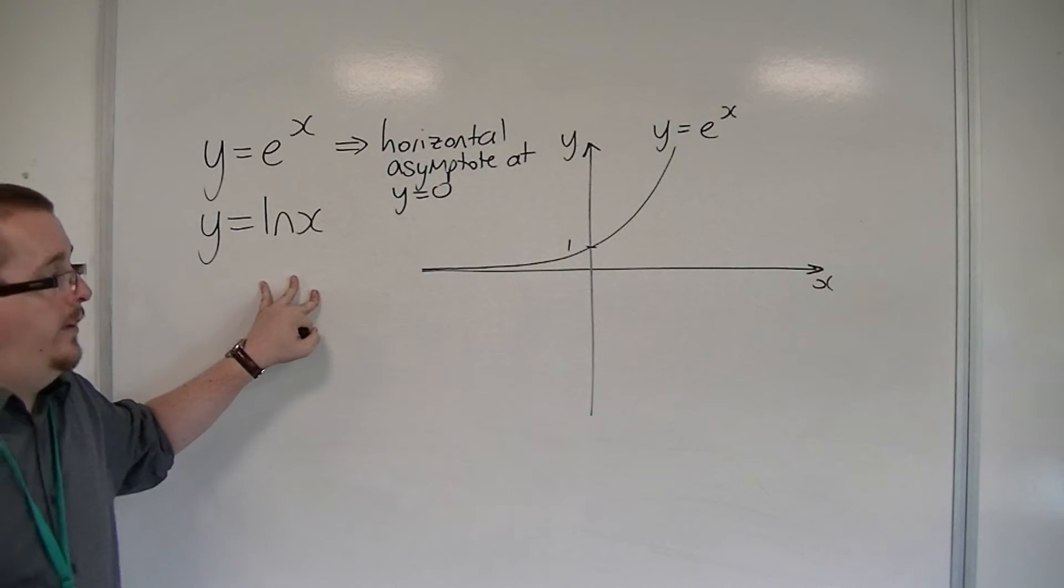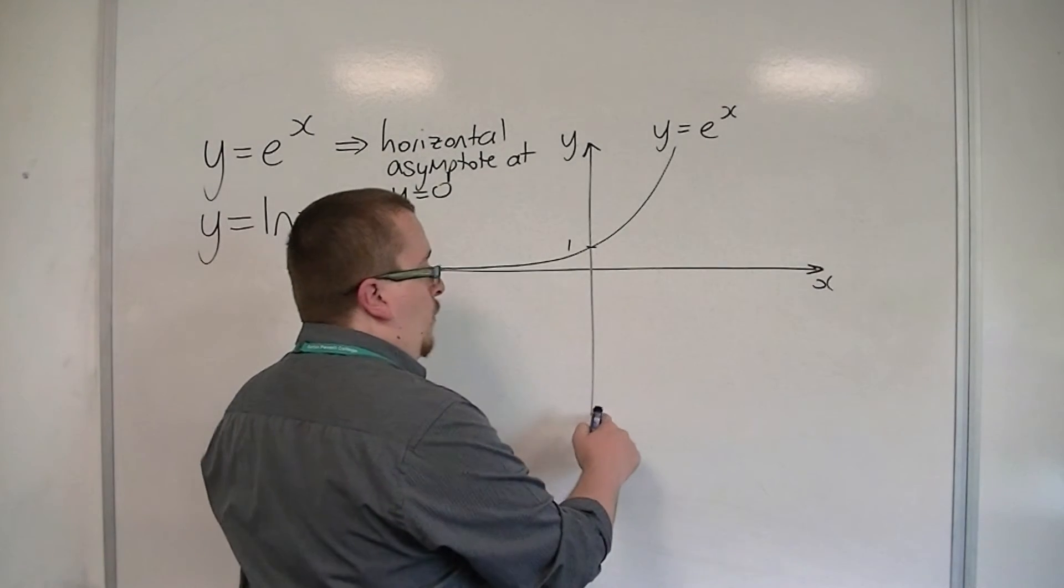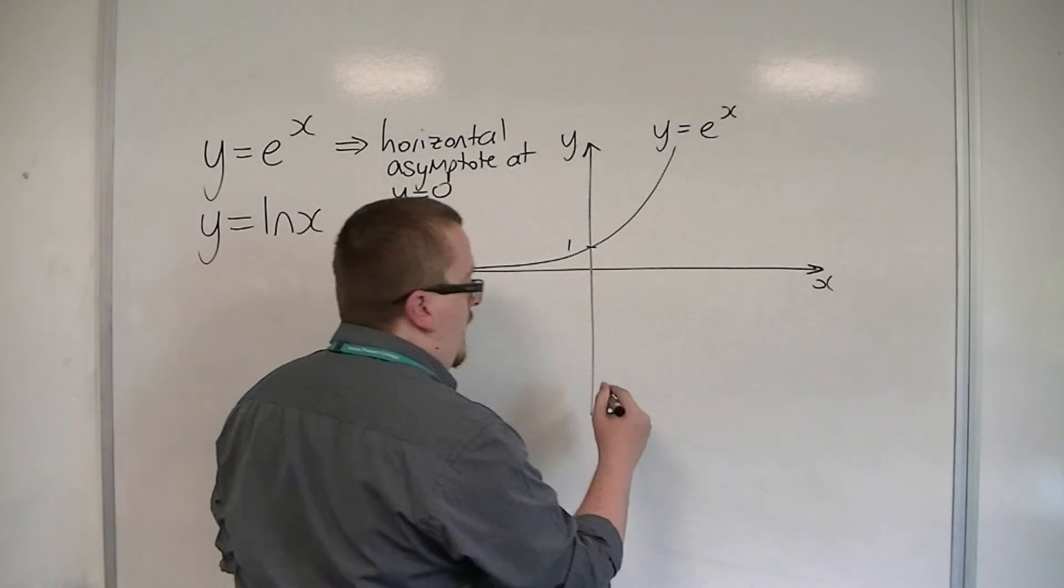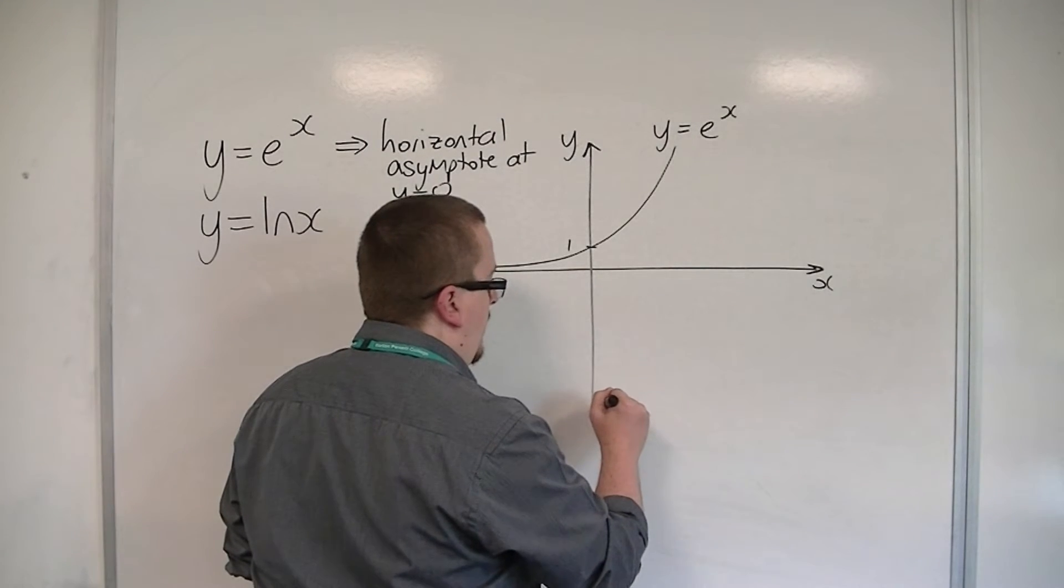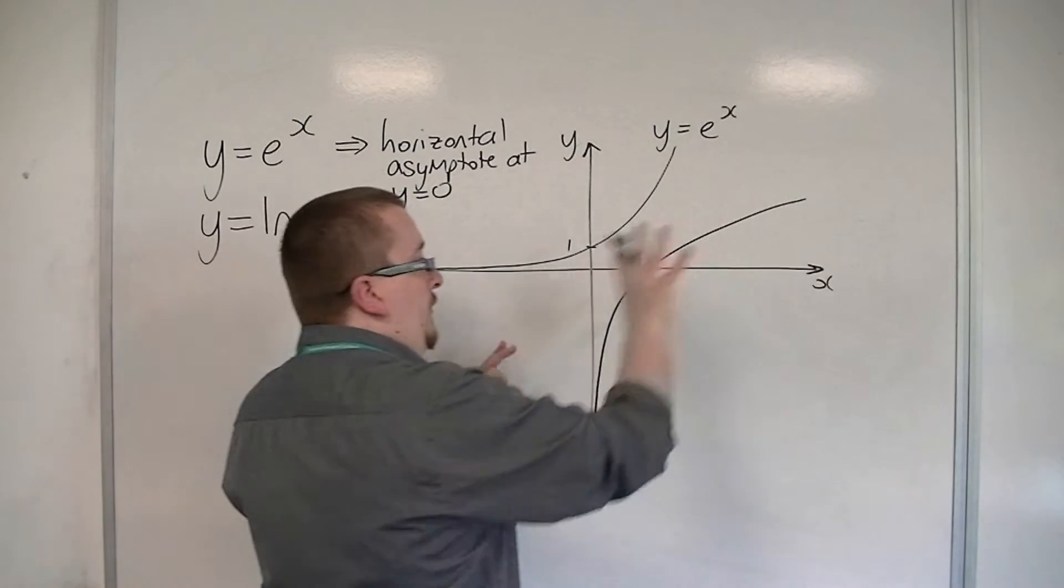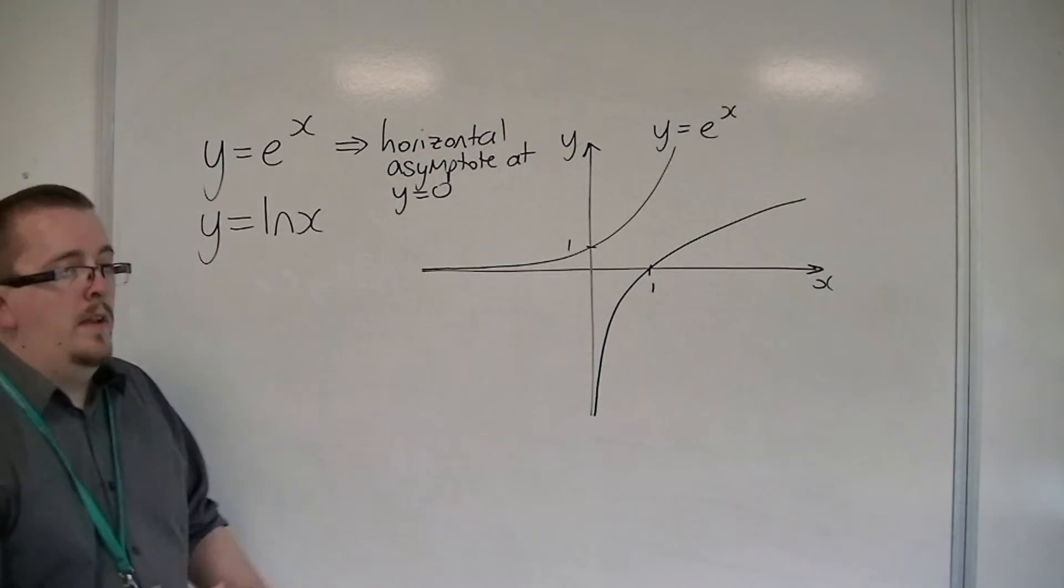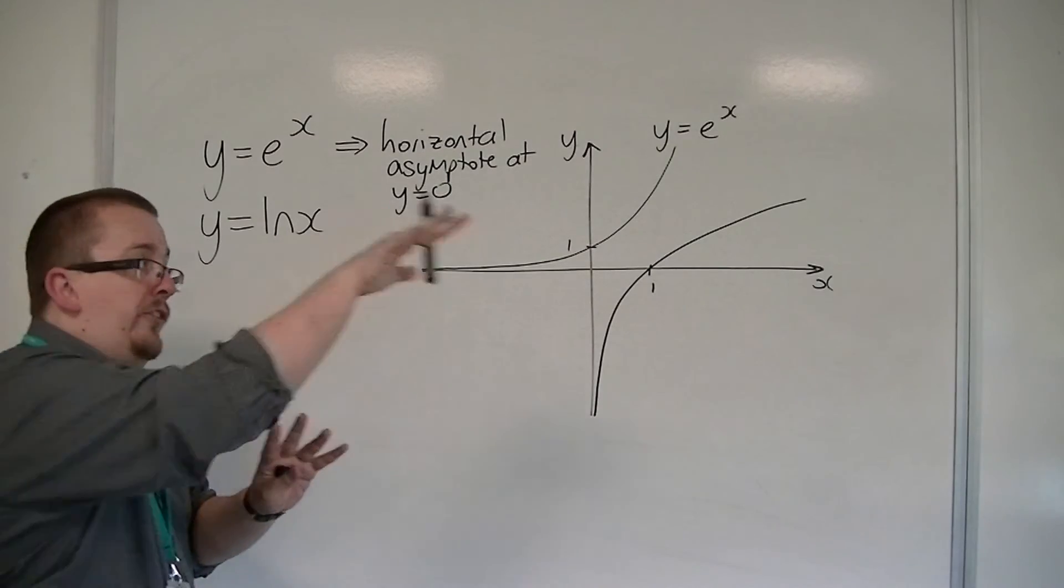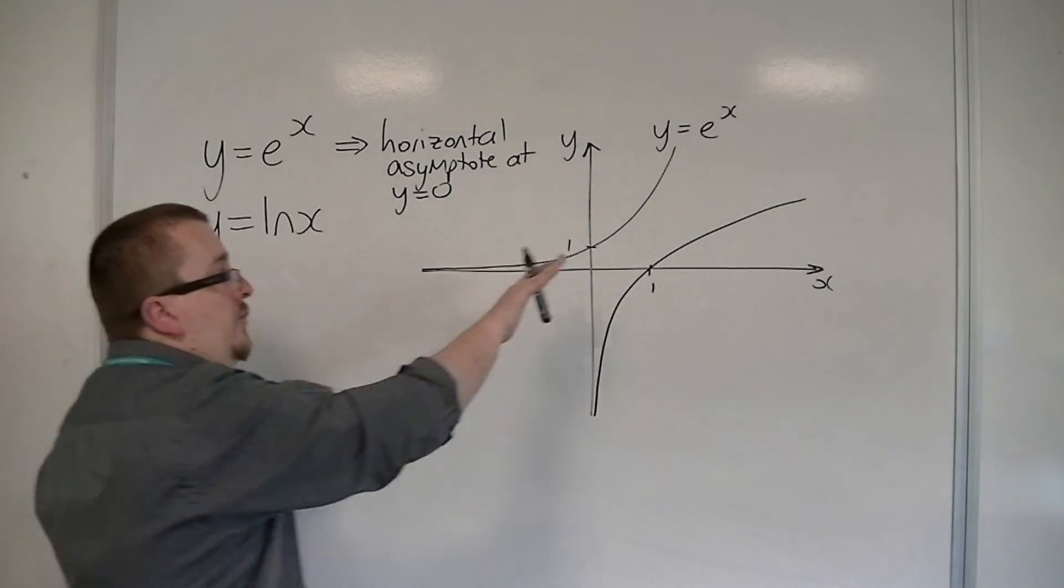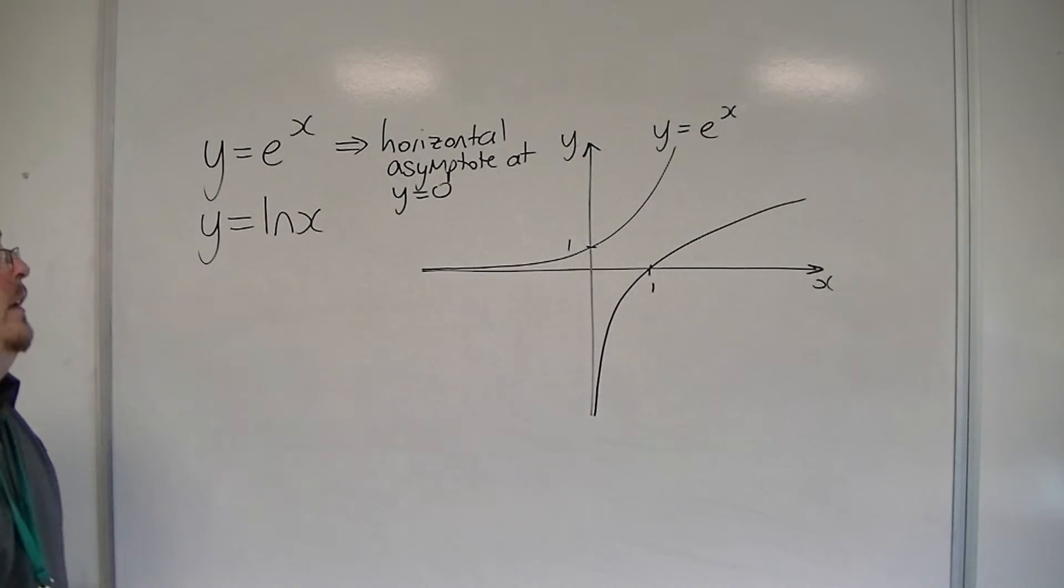y equals log x, on the other hand, starts off way down here, very close to the y-axis, and then increases, but past 1 on the x-axis, it starts to increase slower and slower and slower. So it starts to slow off. It's still increasing, but it's increasing very slowly.